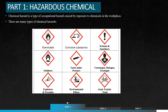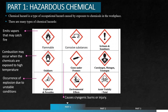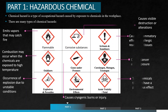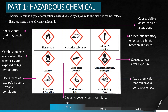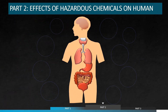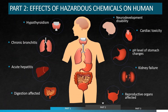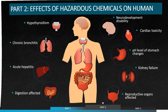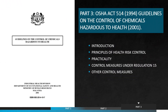Categories of hazardous chemicals are as follows. These are the effects of hazardous chemicals on humans. Now we will look at the guidelines on the control of hazardous chemicals based on OSHA Act 514.